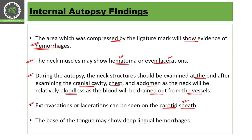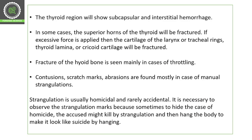The base of the tongue may show deep lingual hemorrhages, as the tongue may protrude outside the mouth. The thyroid region will show subcapsular and interstitial hemorrhages around the area of the thyroid and sub-scapular region.